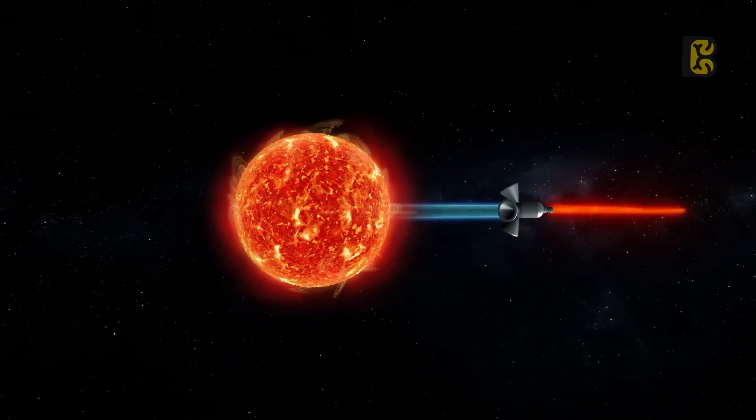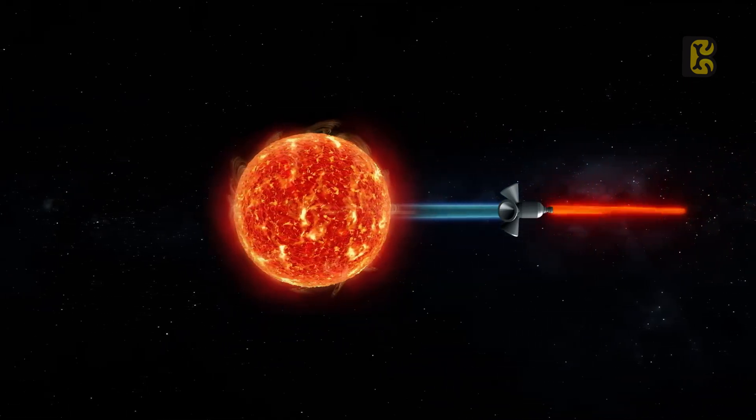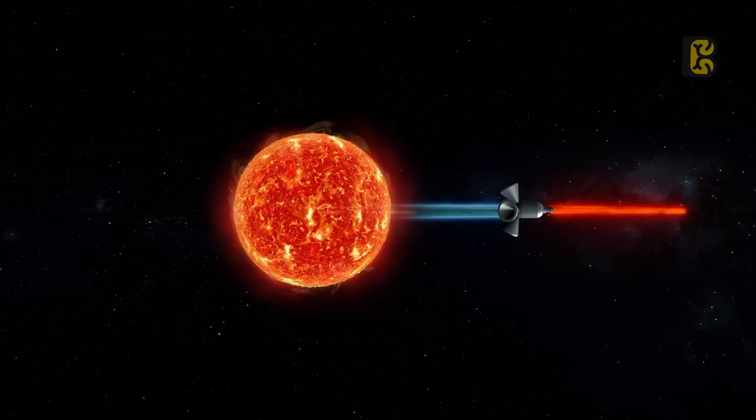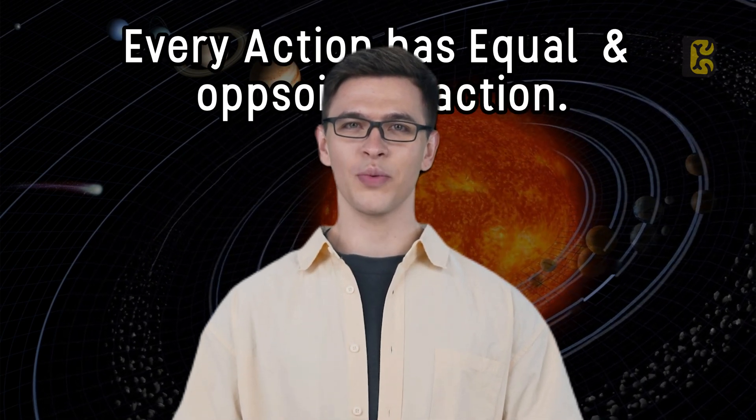In this way, our Sun would use its own matter as propellant after ignition impact and move in the opposite direction of the direction in which we shoot the particles, because as Newton's second law suggests, every action has an equal and opposite reaction.